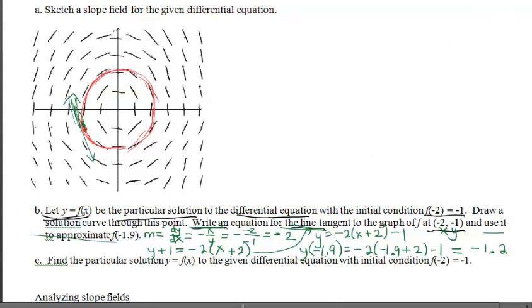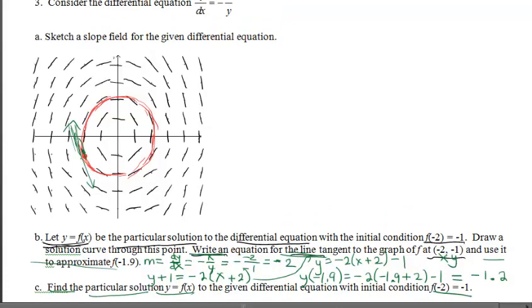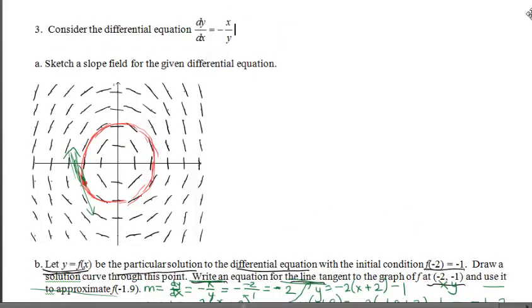Let's look at the part C that's going to take the longest here. Part C says to find the particular solution. That means actually separate the variables, find antiderivatives, plug this value in to get the C. So remember what we're talking about here. We have a feeling that the antiderivative, once I integrate, should result in us getting an equation that represents a circle.